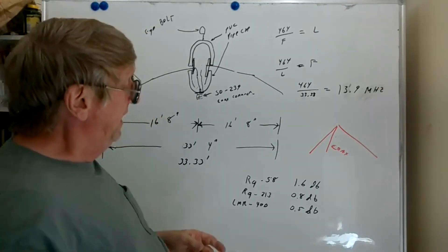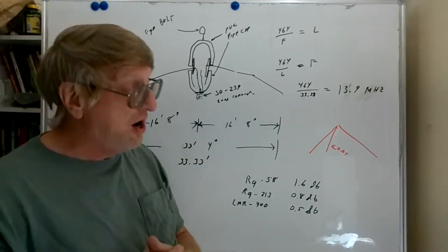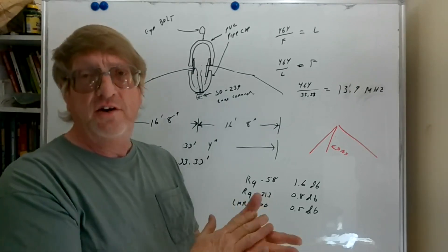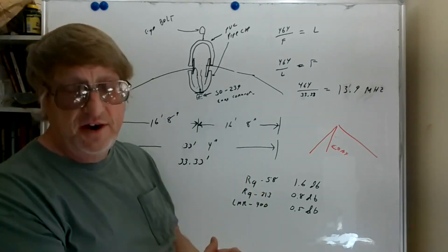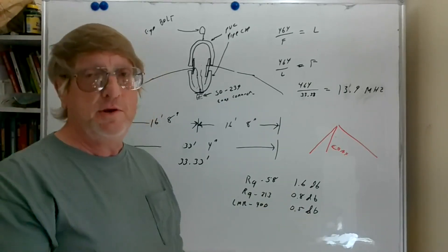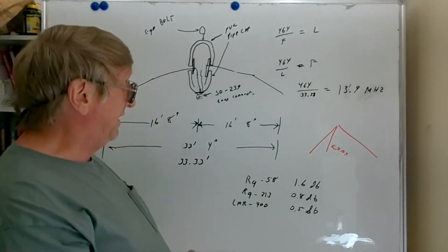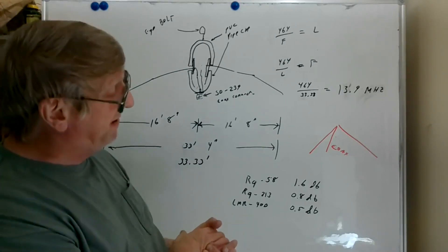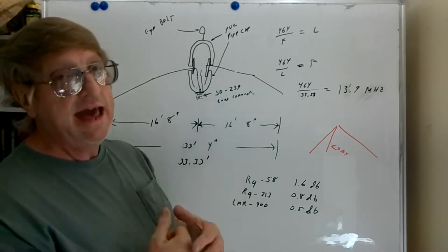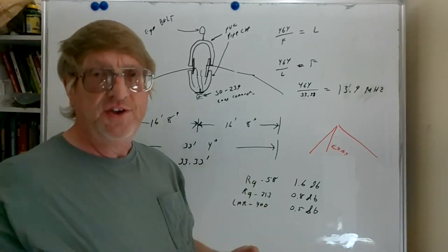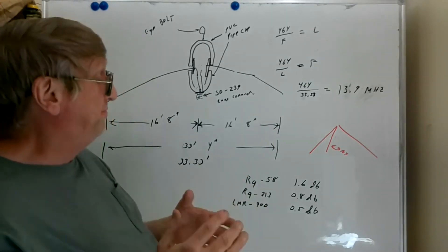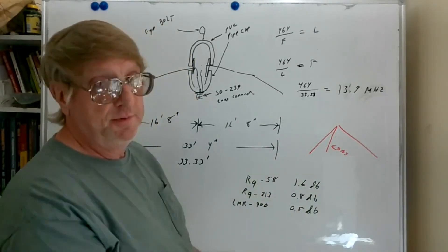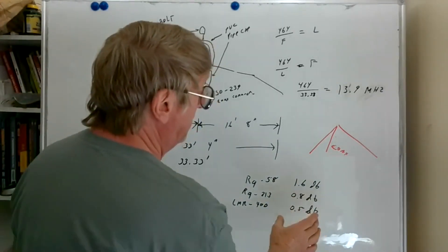I'm using RG-58. I did some calculations and looked at the losses, assuming up to about a 2:1 SWR, which I should be able to get below. I'm going to trim these ends to get this thing to resonate near the center of the amateur 20 meter band. With RG-58, 100 feet of it at 14.35 megahertz and adding in a tenth for additional loss because of SWR, I end up with about 1.6 decibels of loss. If I use RG-213, about 0.8 decibels. LMR-400, about a half a decibel of loss.